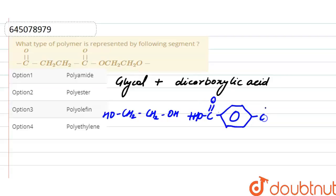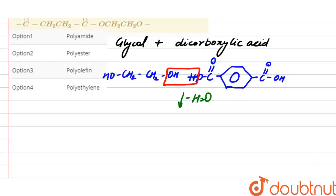Now from this dicarboxylic acid, there is a removal of one water molecule. And after removing water molecule, the polymer formed here is polyester.